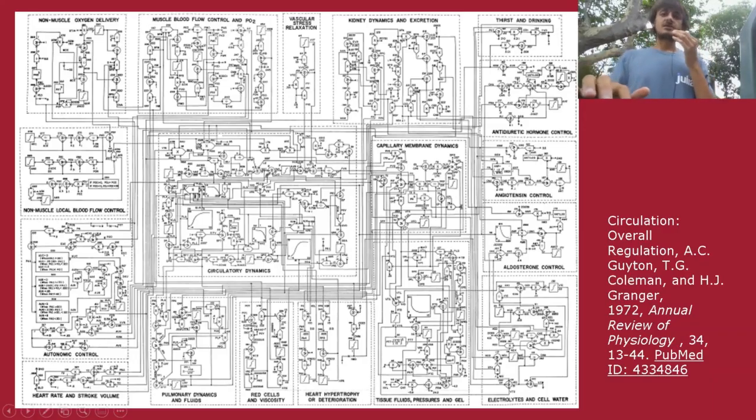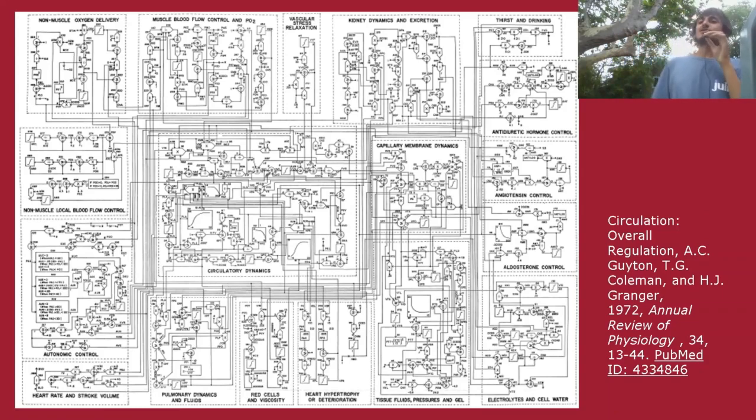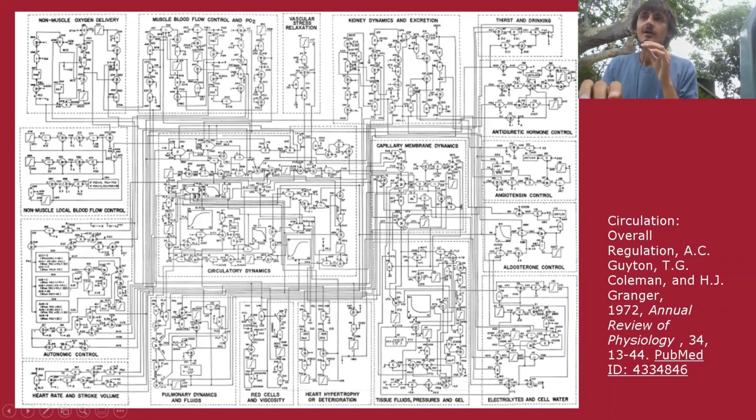Now a real world case where this is very valuable is if you take a real model—this is a circulatory dynamics model. Each and every one of the blocks in this model was determined by hand from experimental data. This is extremely time consuming. Let's say that you didn't have someone work out this thirst and drinking analytical expression, this part of the model, but you still had the experimental data.